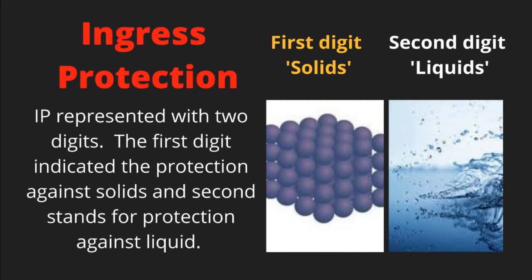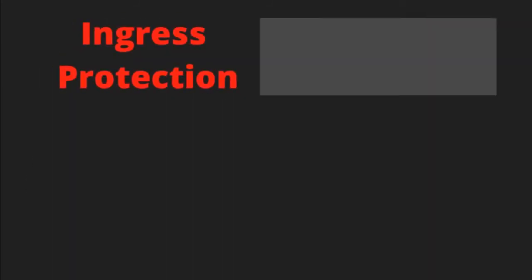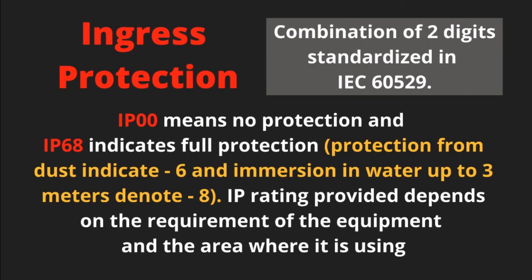Ingress Protection (IP) is indicated with two digits. The first digit indicates protection against solids and the second stands for protection against liquids. The combination of two digits is standardized in IEC 60529.